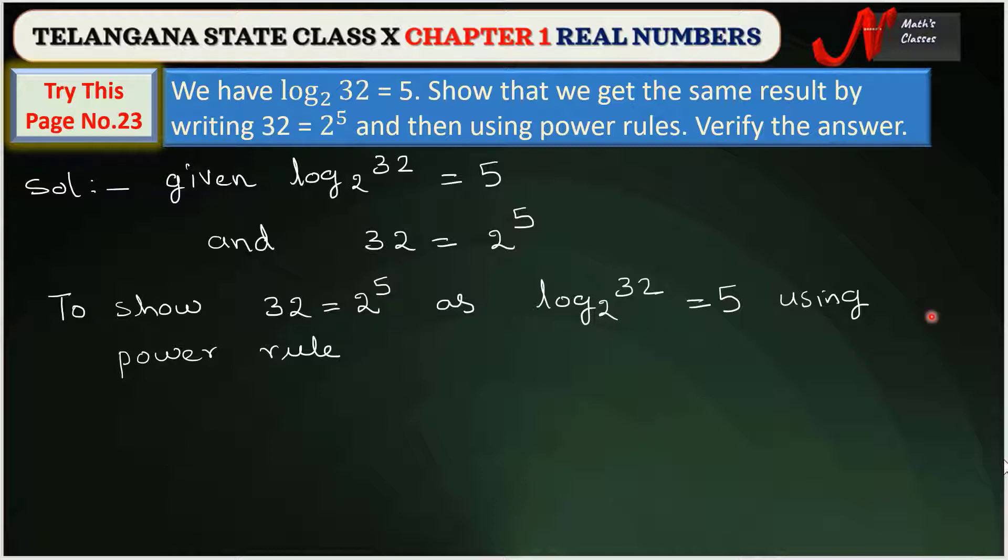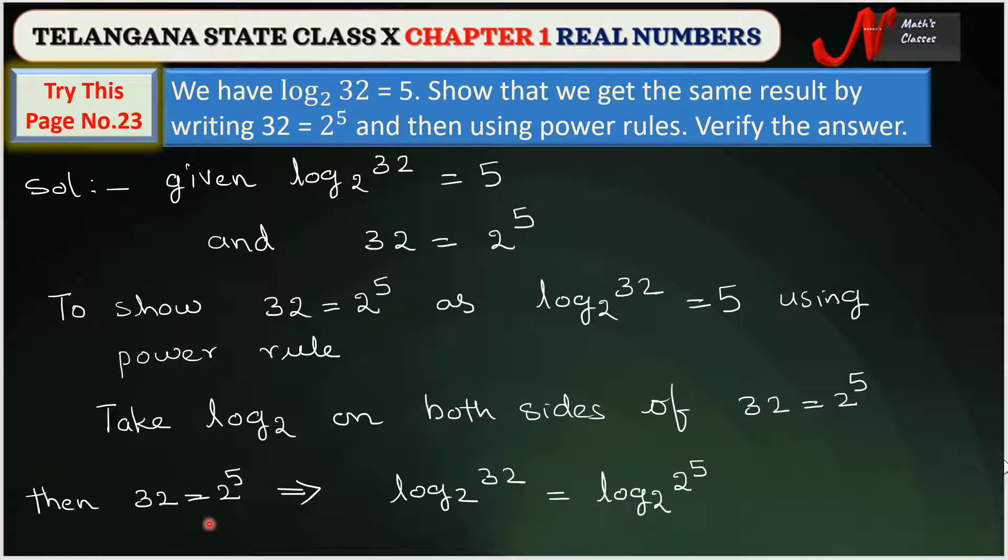Take log₂ on both sides of 32 = 2⁵. Then we can write log₂32 = log₂(2⁵).